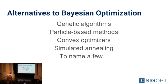There exist alternatives to Bayesian optimization that you may have heard of, available in open source packages — such as particle swarm methods or genetic optimization — but we would strongly recommend using Bayesian optimization in most use cases.